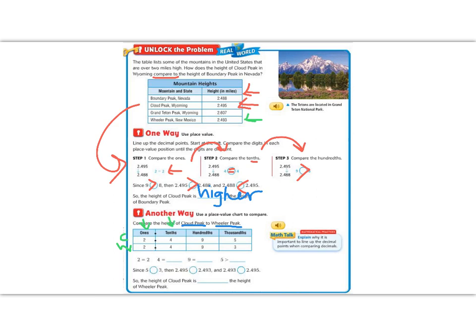In the hundredths place, 9 is equal to 9, so we can't compare there. In the thousandths place, we have a 5 and a 3. We have a difference. 5 is greater than 3.